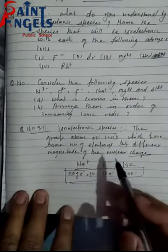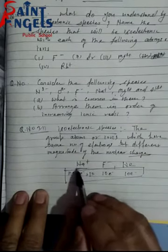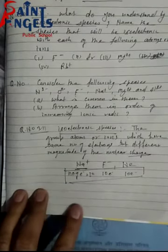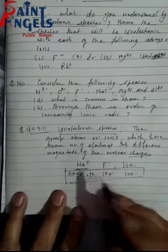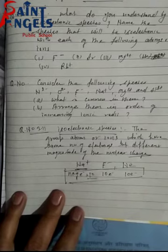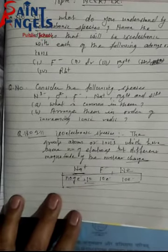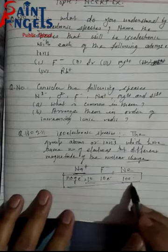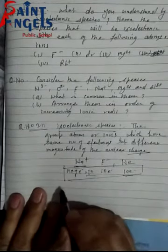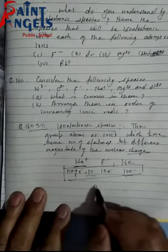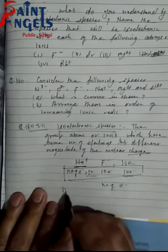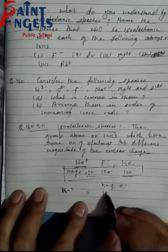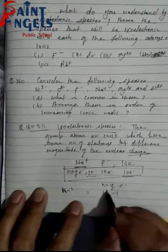For example, sodium (Na) loses 1 electron — it has atomic number 11, so with a 1+ charge it has 10 electrons. F minus: fluorine has atomic number 9, with a negative charge the total electrons become 10. And neon has 10 electrons as a neutral atom. So Na+, F−, and Ne all have 10 electrons.